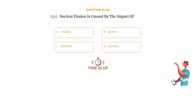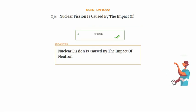The correct answer is Option A: Neutron. Nuclear fission is caused by the impact of neutron.